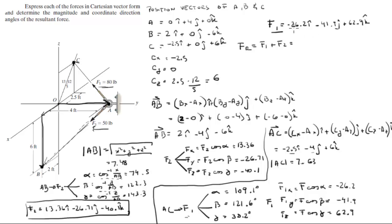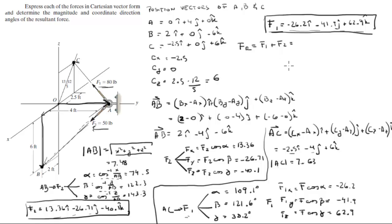Adding F1 and F2 together — adding each corresponding component — the resultant force comes out to be -12.84i - 68.61j + 22.8k.